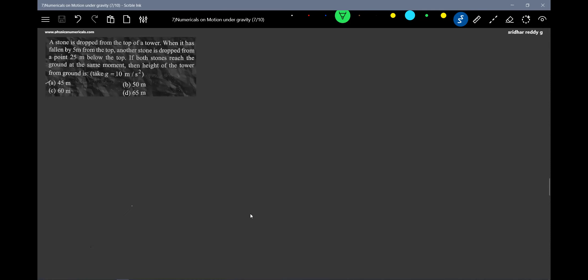If both the stones reach the ground at the same moment, then find the height of the tower from the ground. Let's have some rough analysis. The first stone is what I'm going to drop.